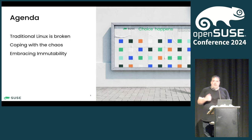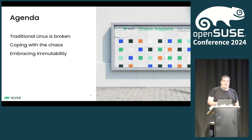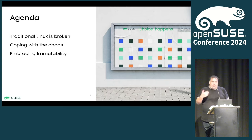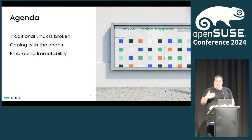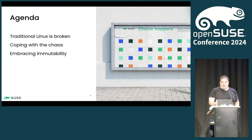The agenda for this morning: I'm going to be telling you how all that Linux we've been doing for 20 years is fundamentally broken. Then talking about how most of you already know this and you've been coping with the chaos for so long you might not realise all the steps you've been doing. And then how immutability swoops in and hopefully makes all our lives easier.